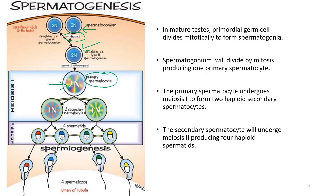The primary spermatocyte then undergoes meiosis one to produce two secondary spermatocytes, which are already haploid. The secondary spermatocyte then undergoes meiosis two to produce four spermatids, which are also haploid. These spermatids will then undergo spermiogenesis to produce spermatozoa, which we will learn about later.